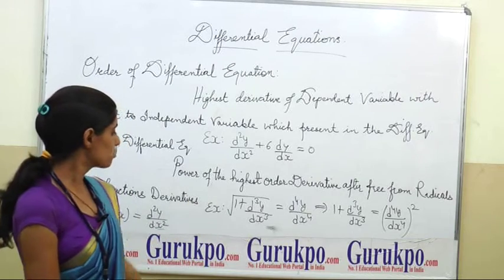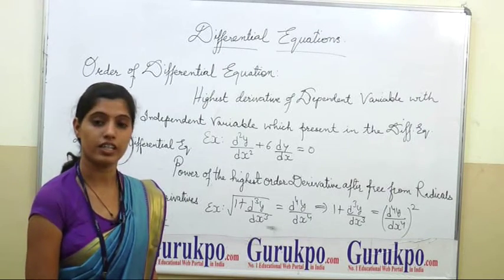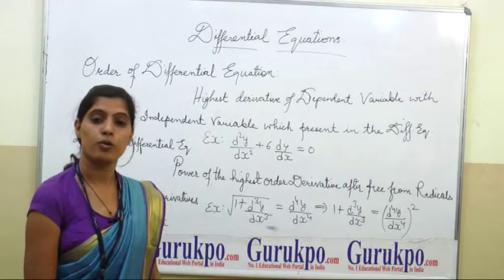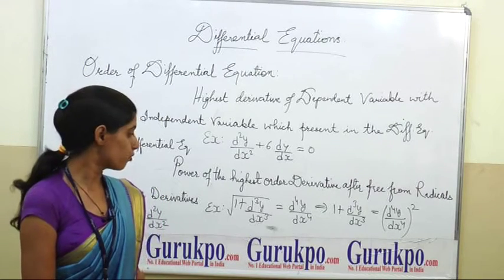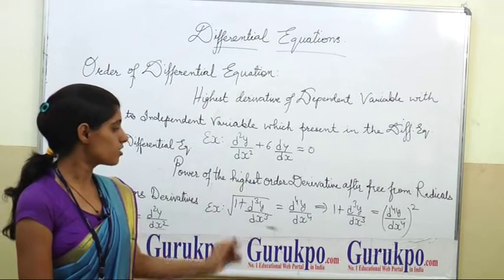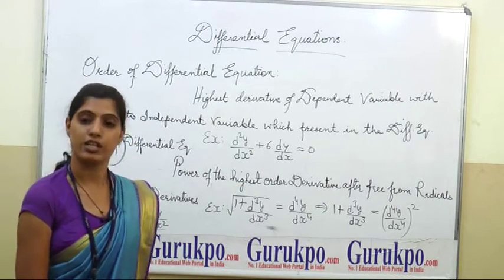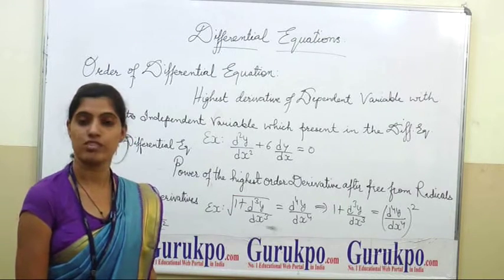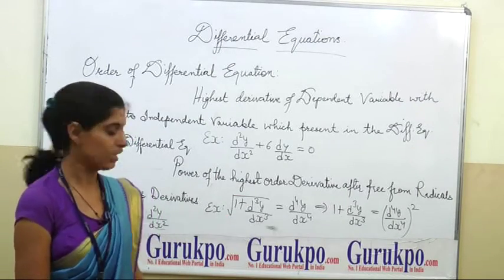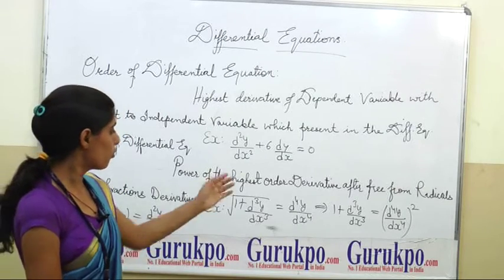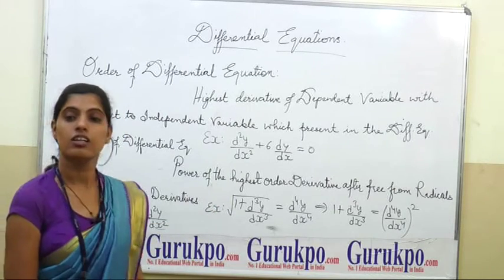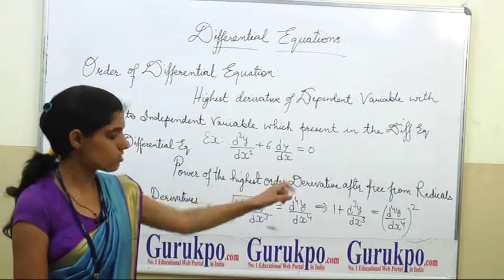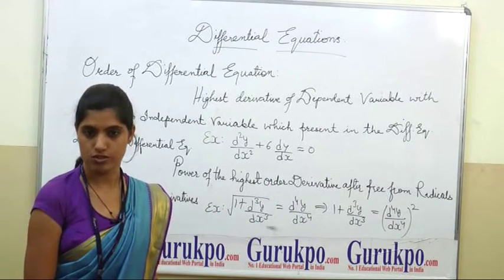For example: √(1 + d³y/dx³) = d⁴y/dx⁴. Squaring both sides: 1 + d³y/dx³ = (d⁴y/dx⁴)². Here 4 is the order of the differential equation and 2 is the degree of the differential equation.